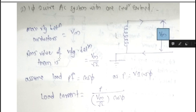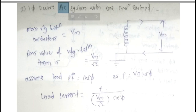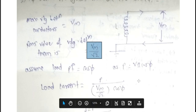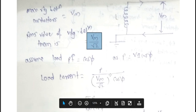Since we are dealing with AC, we consider the RMS value. The RMS value of the voltage between them is Vm by root 2. Assuming the load power factor is equal to cos φ. As we know P = VI cos φ, so we find the current I. Rearranging, I = P / (Vm/√2 · cos φ).